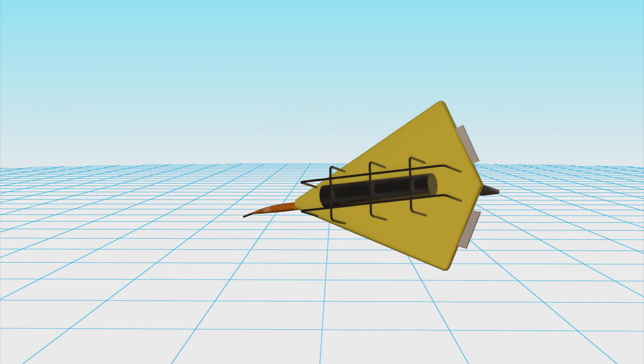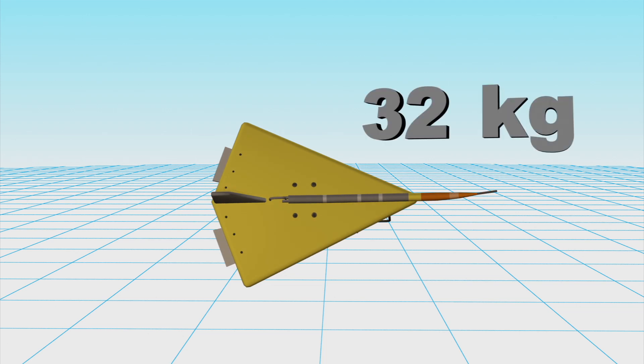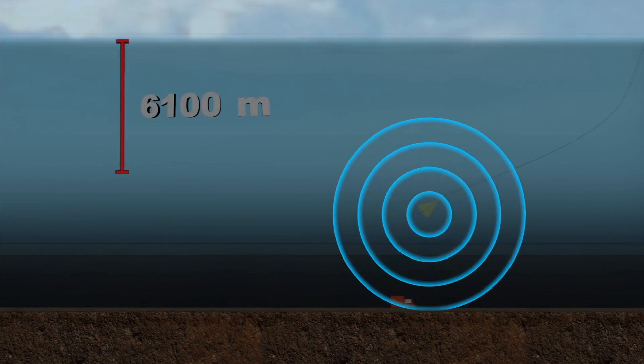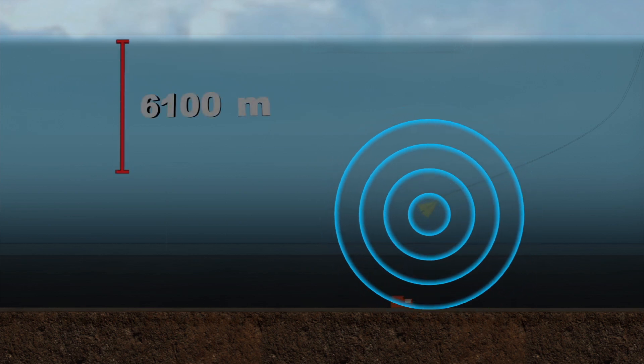The 32 kilogram towed Pinger Locator 25 is a hydrodynamic microphone designed specifically to listen for the acoustic signal given out by the data and cockpit voice recorders carried aboard all aircraft.